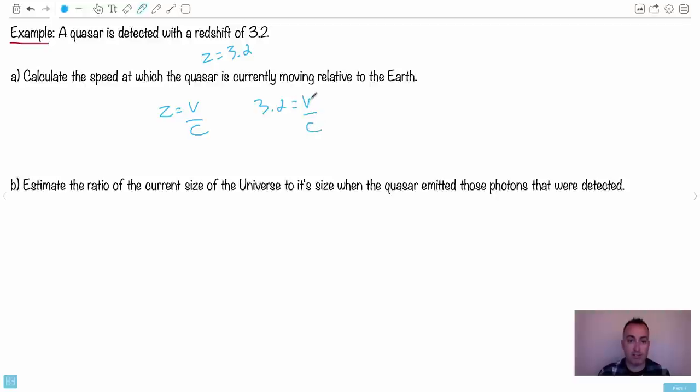So Z equals just V over C. That means 3.2 equals V over C. So if we want the speed, just get V by itself. Just put the C over. So that means you just have V equals 3.2 C. That is the answer. And I want you to think very carefully about this. Turns out that was that easy. The velocity that it is moving relative to the Earth is 3.2 times the speed of light. And you might think, no, nothing's allowed to go faster than the speed of light. Agreed. No information can travel the speed of light like faster than the speed of light. What this tells you is that